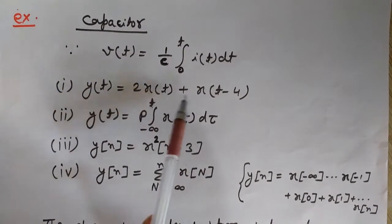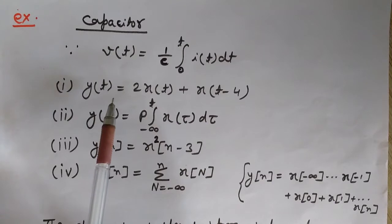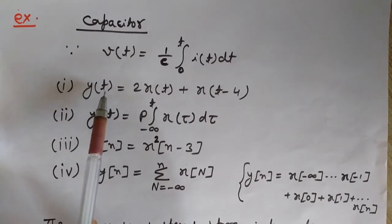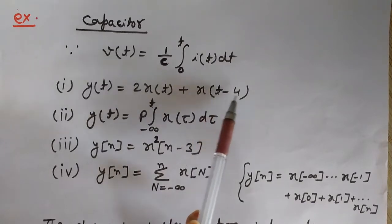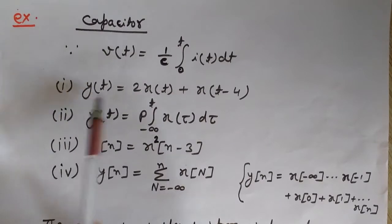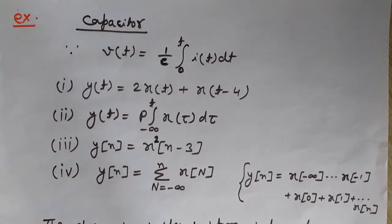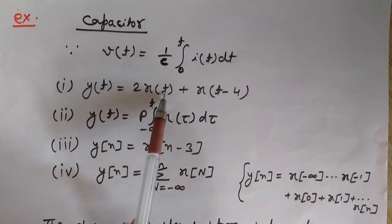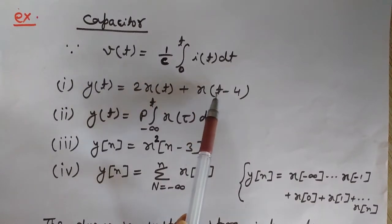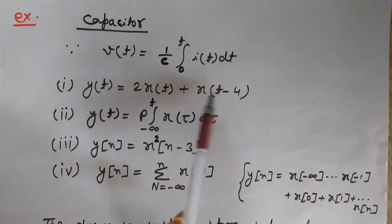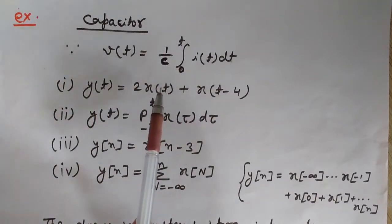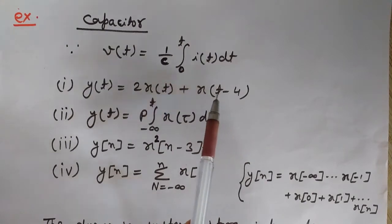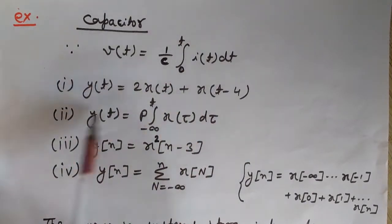Here are more examples of dynamic systems. For y(t) = 2x(t) + x(t−4), substitute t = 2: y(2) = 2x(2) + x(2−4) = 2x(2) + x(−2). The output at t = 2 depends on the input at t = 2 (present) and also at t = −2 (past). So the output at any moment depends on the present input and also on a past input value — confirming it is a dynamic system.